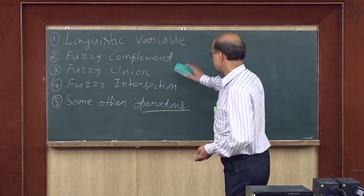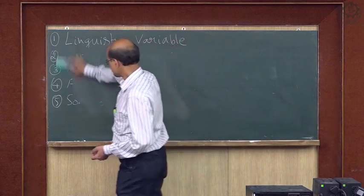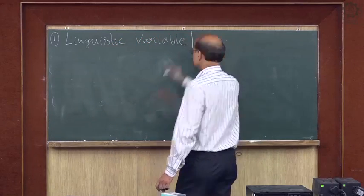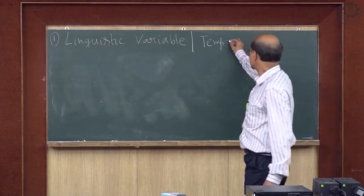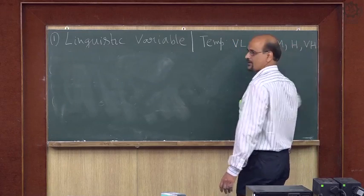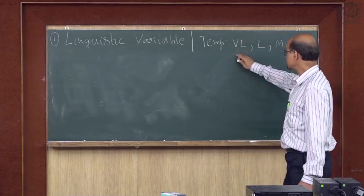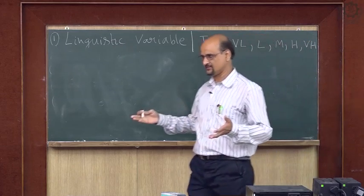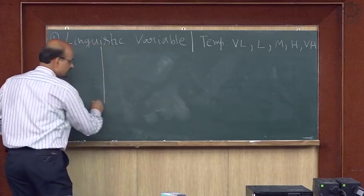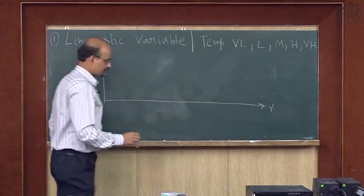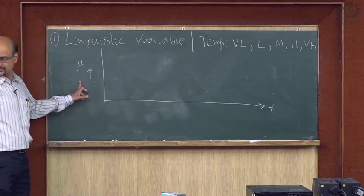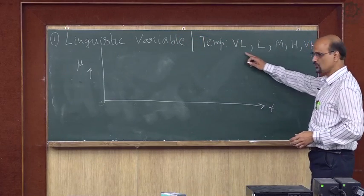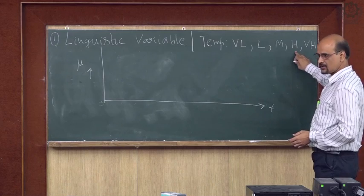Let us start with linguistic variables. Linguistic variable means, suppose we define temperature. Temperature can be expressed linguistically as very low, low, medium, high, very high. As discussed in previous classes, these terms like very low or low, medium, etc., we cannot define exactly. To define this, suppose this is your T axis and mu is the membership function. I want to designate VL, L, M, H, and VH — very low, low, medium, high, and very high temperature.